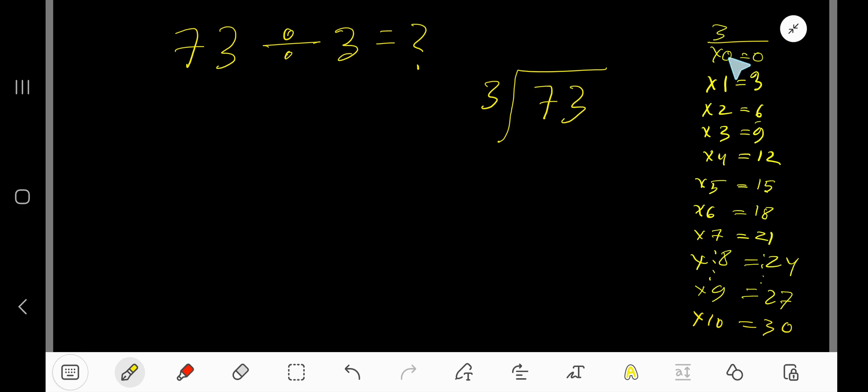3 times 7 is 21. To find out the multiplication table of 3, just add the previous step. 0 plus 3 is 3, 3 plus 3 is 6, 6 plus 3 is 9, 9 plus 3 is 12, 12 plus 3 is 15, 15 plus 3 is 18, 18 plus 3 is 21.